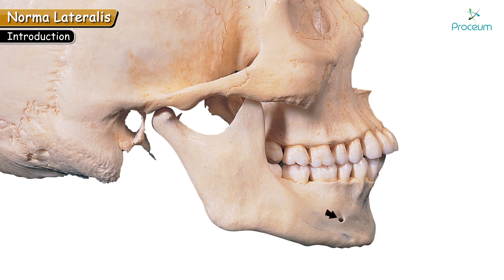Just in front of the oblique line, the most prominent foramen here is the mental foramen. The mental foramen is well appreciated, and the structures passing through it are the mental nerve and mental vessels.